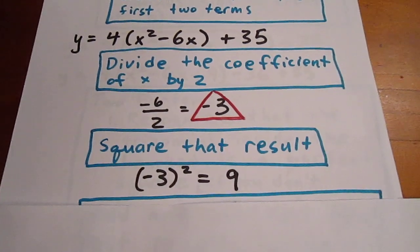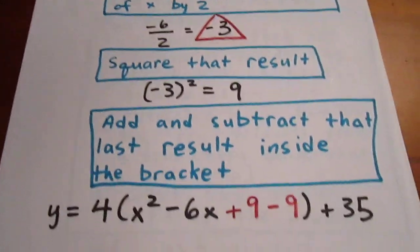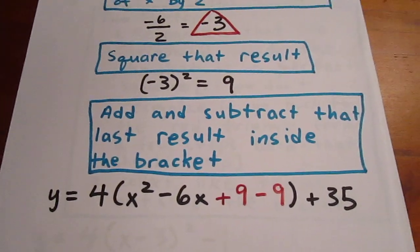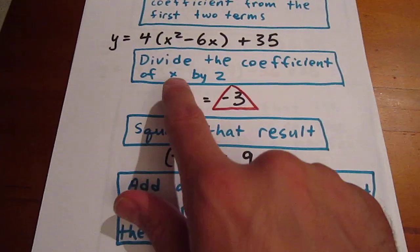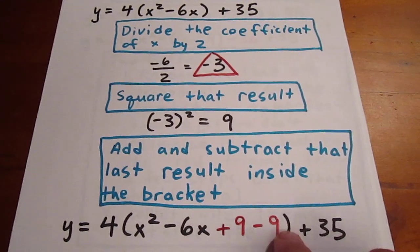Our next move is to square that result, which gives us 9. We then want to add and subtract that last result inside the bracket. So instead of x²-6x, we want it to say x²-6x+9-9.